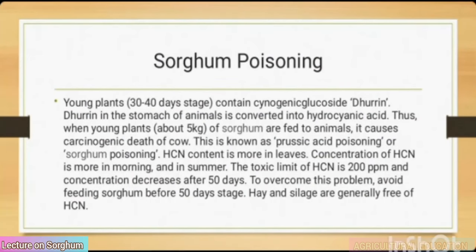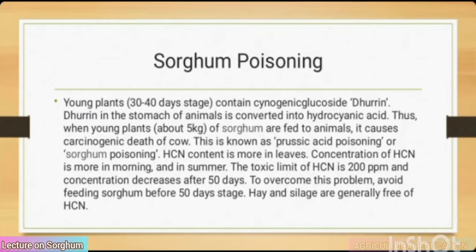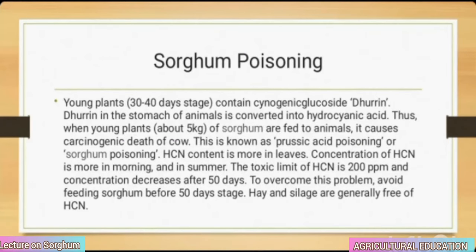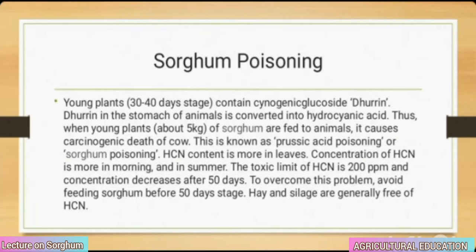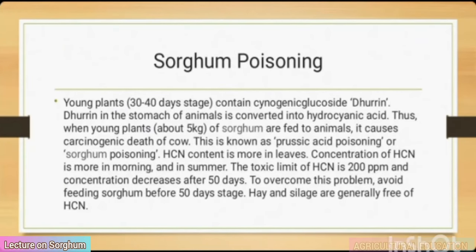Sorghum poisoning: young plants (30 to 40 days) contain cyanogenic glucoside dhurrin. In the stomach of animals, dhurrin is converted into hydrocyanic acid (HCN). When young plants — about 5 kg of sorghum — are fed to animals, it causes death. This is known as prussic acid poisoning or sorghum poisoning. HCN content is more in leaves; concentration is higher in the morning and in summer. The toxic limit of HCN is 200 ppm; concentration decreases after 50 days. To overcome this, avoid feeding sorghum before 50 days. Hay and silage are generally free of HCN.